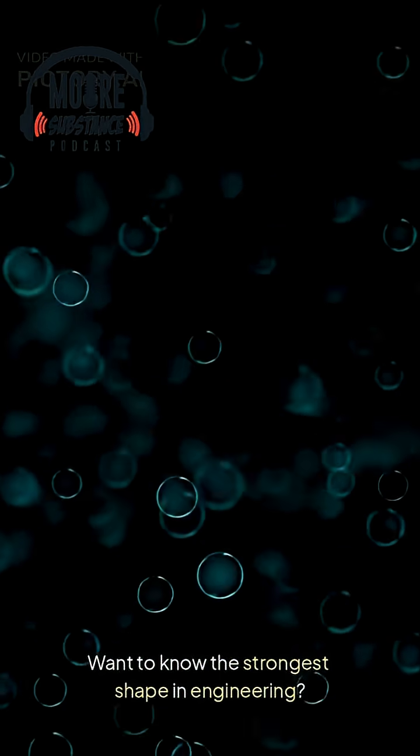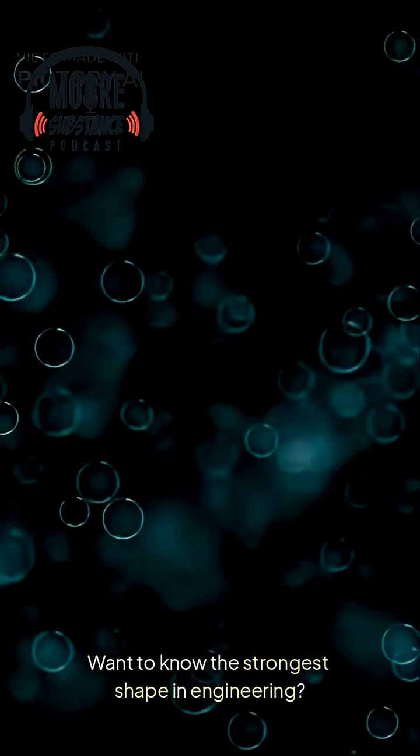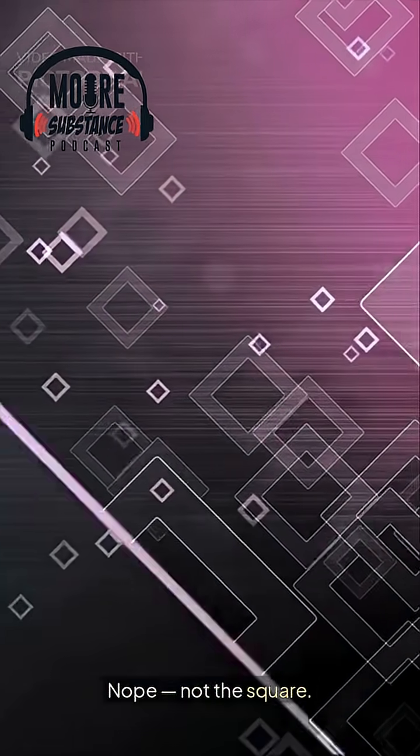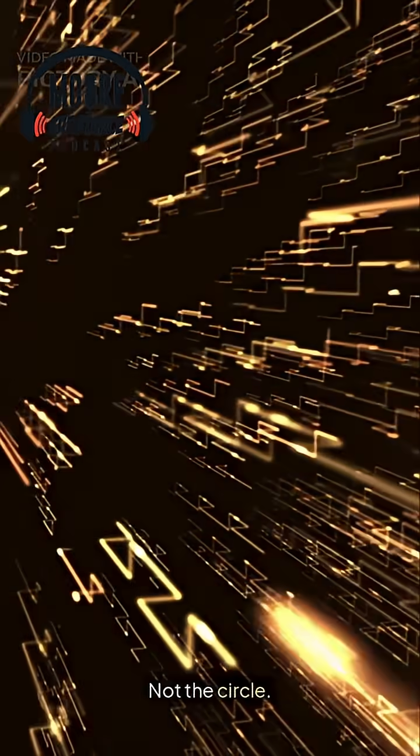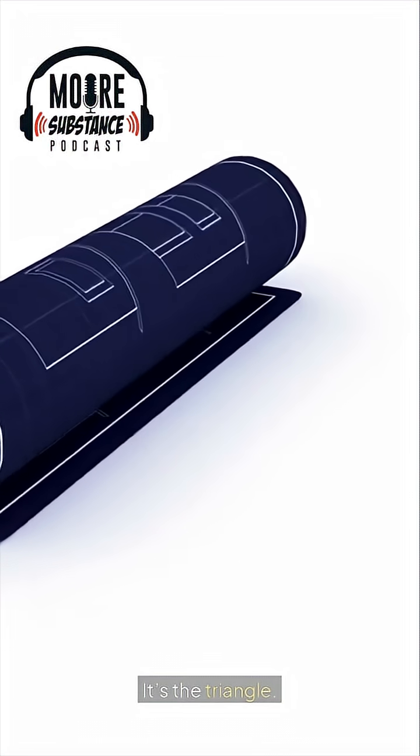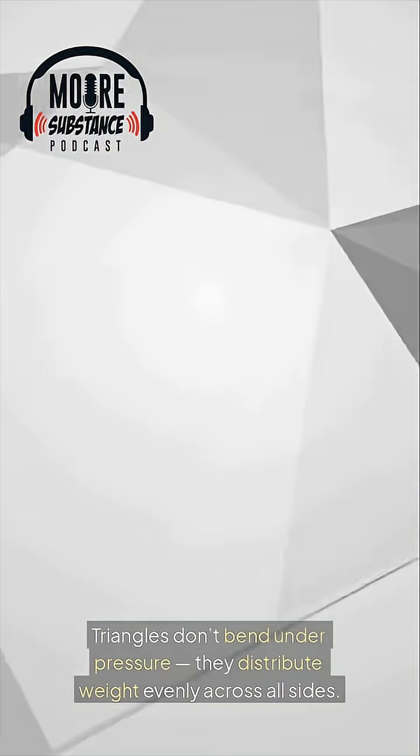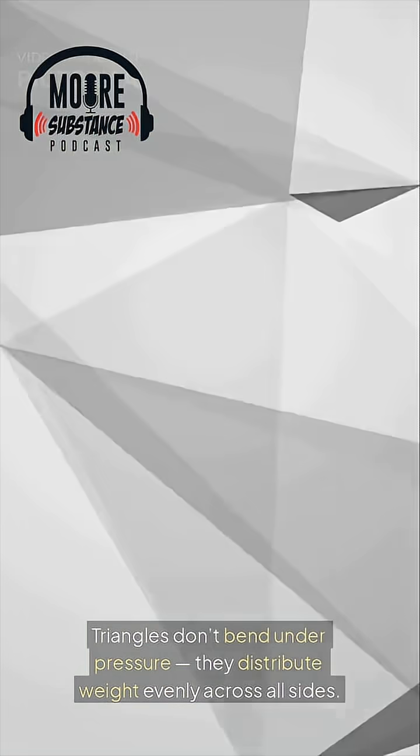Want to know the strongest shape in engineering? Nope, not the square, not the circle. It's the triangle. Triangles don't bend under pressure - they distribute weight evenly across all sides.